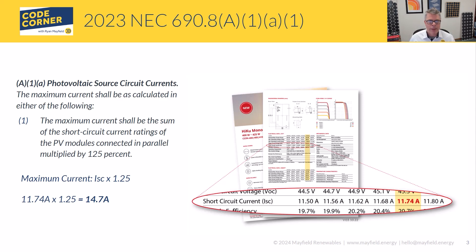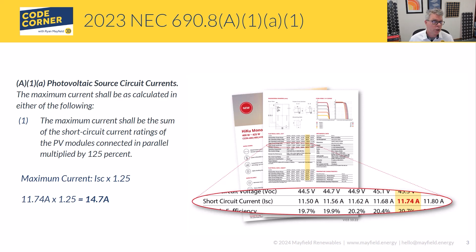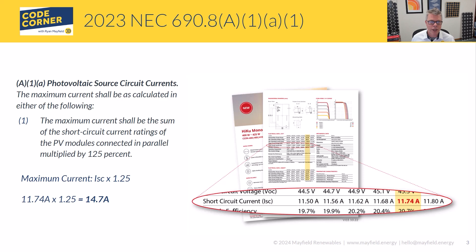I encourage people to go through this step by step — don't try to jump ahead when applying correction factors, because the risk is applying too many correction factors to your calculations and ultimately oversizing your wire. So this first step is multiplied by 125%. We'll talk in a future video about 690.8B and how to apply these values, but right now just know that maximum current is what we're trying to get after, and this is how you get it for your PV source circuits.